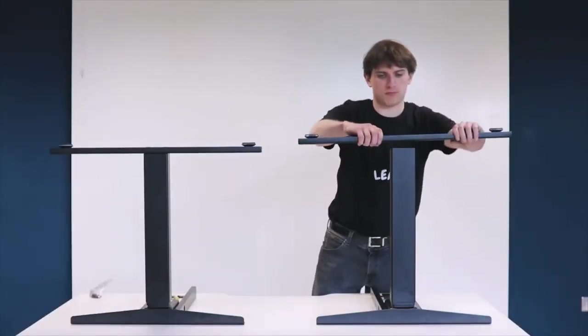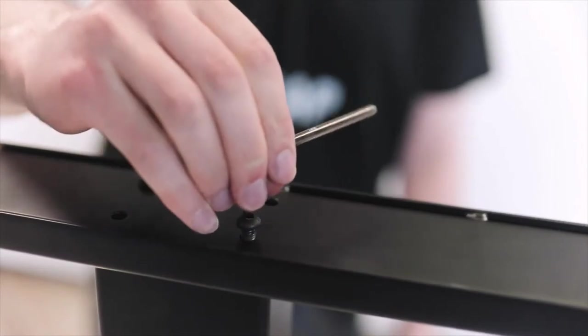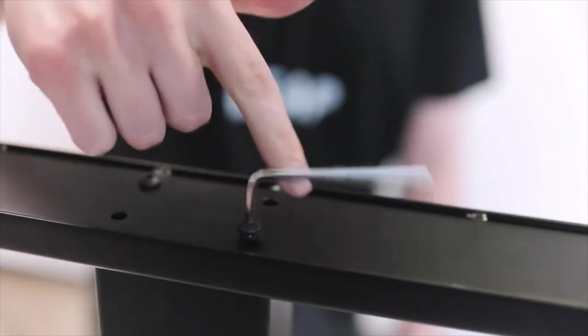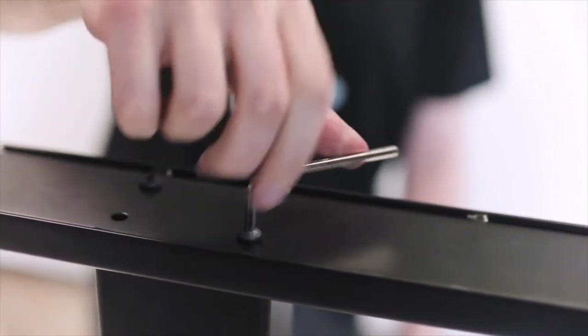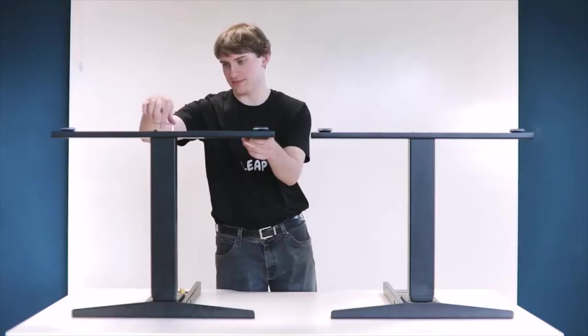Next, take the feet and tighten them onto the legs in a crisscross pattern with the allen key provided. Please ensure that the longer ends of the feet are facing the same way as the longer ends of the side bracket.